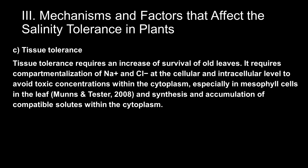Lastly is tissue tolerance. Tissue tolerance requires an increase of survival of old leaves. It requires compartmentalization of sodium and chlorine ions at the cellular and intracellular level to avoid toxic concentrations within the cytoplasm, especially in mesophyll cells in the leaf, and synthesis and accumulation of compatible solutes within the cytoplasm. Compartmentalization of sodium and chlorine ions is important because it maintains osmotic balance. According to Ashraf and Foolad in 2007, osmotic tolerance plays an important role in plants, especially in protecting enzymes from denaturation, stabilizing membranes or macromolecules, or playing adaptive roles in controlling osmotic adjustments.